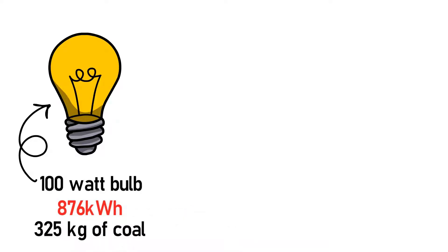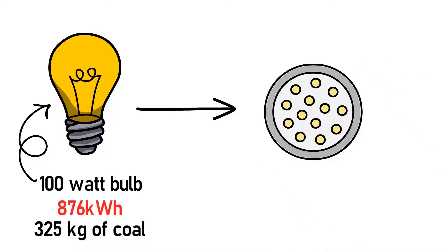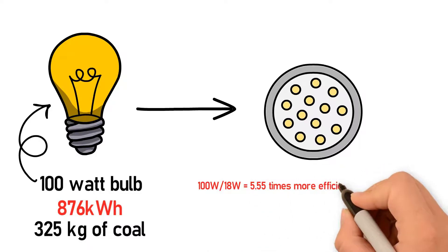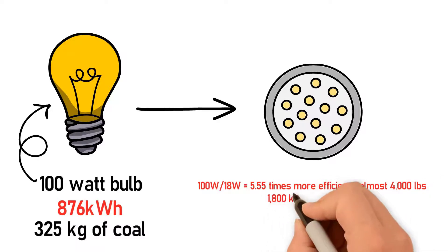If we calculate the savings from switching incandescent to LED, we get the following: 100 watts over 18 watts equals 5.55 times more efficient, which also equals almost 4,000 pounds or 1,800 kilograms of coal saved.